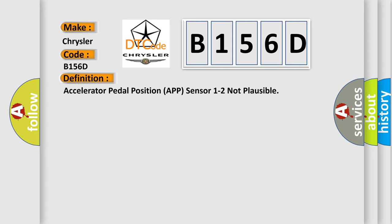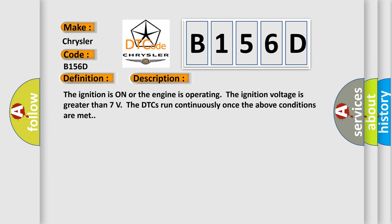And now this is a short description of this DTC code. The ignition is on or the engine is operating. The ignition voltage is greater than 7 volts. The DTCs run continuously once the above conditions are met.